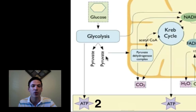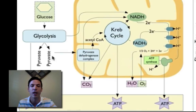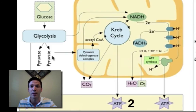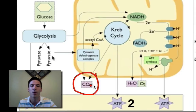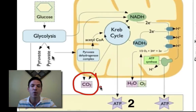After glycolysis, we took those pyruvate molecules into the matrix of the mitochondria, and that was followed by the second step known as the Krebs cycle. In the Krebs cycle we created another two ATP molecules, and this is also where we created CO2 — the carbon dioxide you breathe out. So after glycolysis and the Krebs cycle, we're at a total of about four ATP molecules.